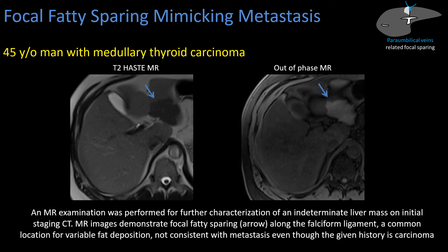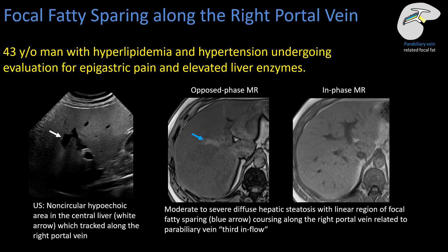Here we have a 43-year-old man who presented to the emergency department for epigastric pain and elevated transaminases. On ultrasound we saw a background of diffuse moderate to severe steatosis — you can see how the diaphragm is obscured — and then these areas of hypoechogenicity, called indeterminate but possible focal fatty sparing. This man did go to MRI and we can see the fatty sparing in that classic location anterior to the right portal vein, related to those peribiliary veins and third inflow.